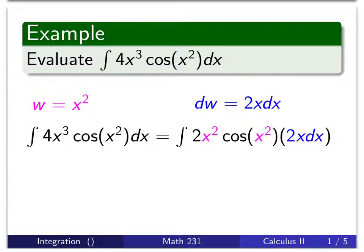But if I start rewriting things just a little bit and pull 2x off of the 4x³, I'll still be left with a 2x². Which might seem a little bit problematic at first, but x² is what we let w be equal to. So when I make my substitution, I'll still have a w out front here, a w on the inside, and then this is my dw.